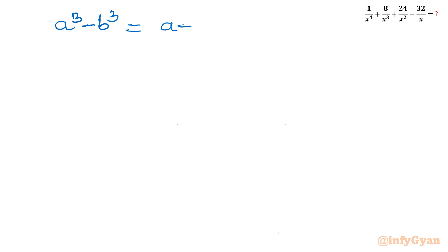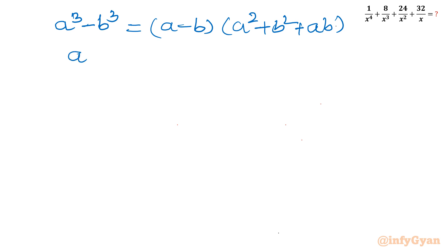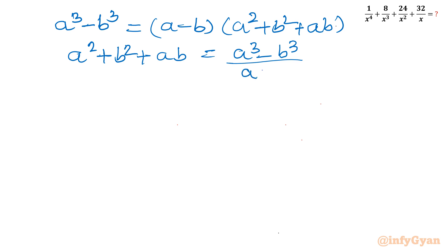Now we recall one algebraic identity: a³ - b³ = (a - b)(a² + ab + b²). From this we can write our required expression: a² + ab + b² = (a³ - b³) / (a - b).